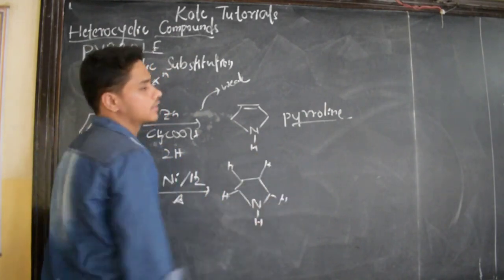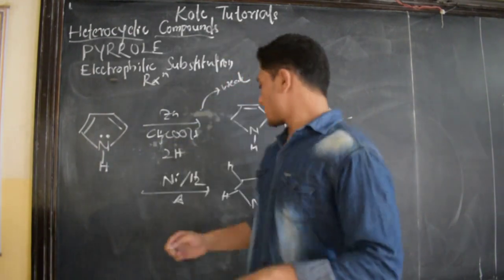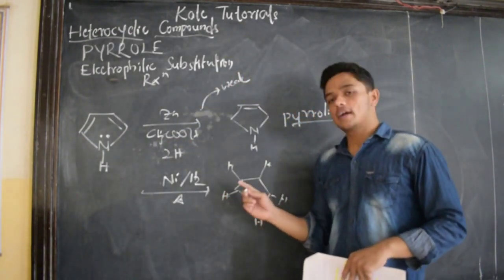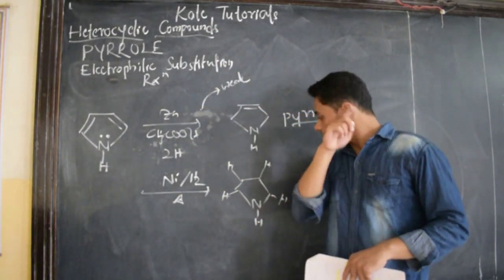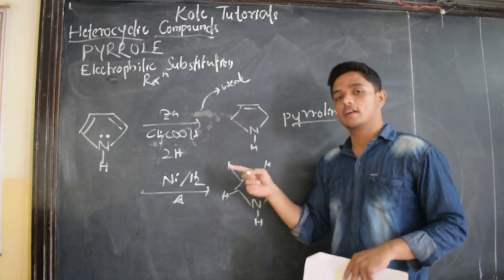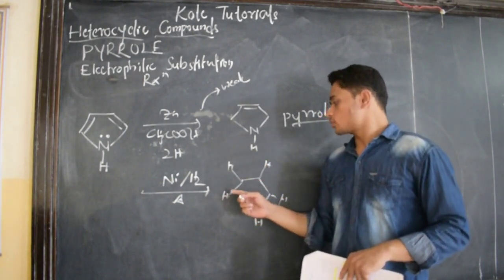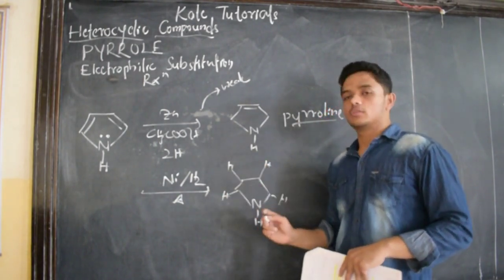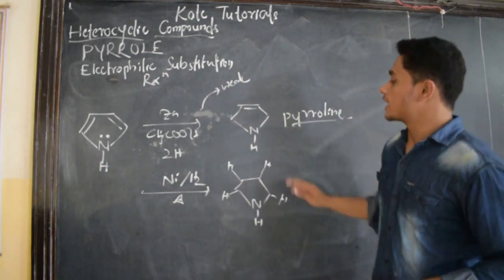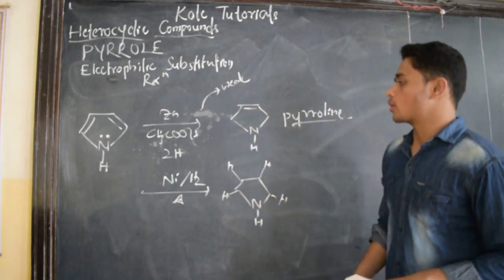In electrophilic substitution, we saw four iodines replaced hydrogens. That is, hydrogens were replaced by iodine in halogenation, so we got tetraiodopyrrole. But here, we are going to get tetrahydropyrrole.